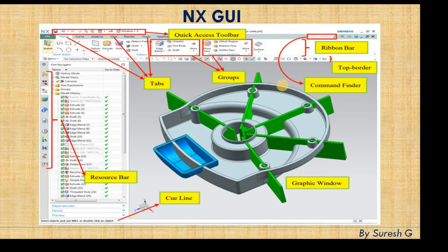To explain the NX GUI in detail: the top border is called the quick access toolbar. Below that, file, home, curve, and analysis are all called tabs. The group icons and toolbars — design toolbars and detail toolbars — are grouped under one category. The complete row is called the ribbon bar. If you know the menu name but not where it is located, you can search it from the command finder.